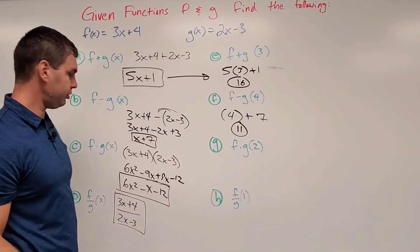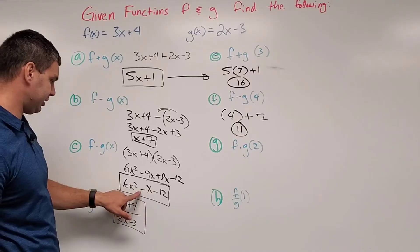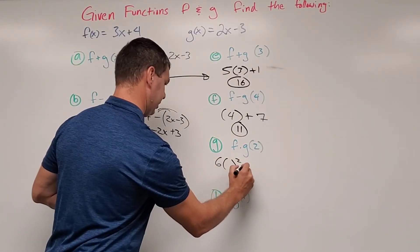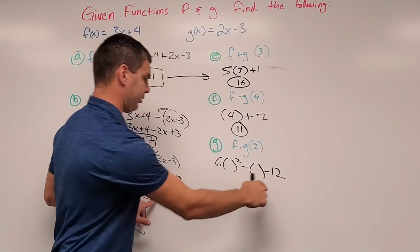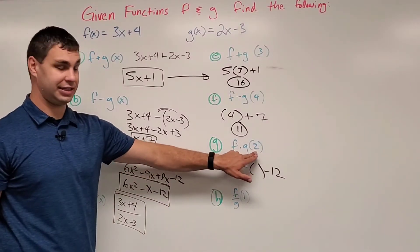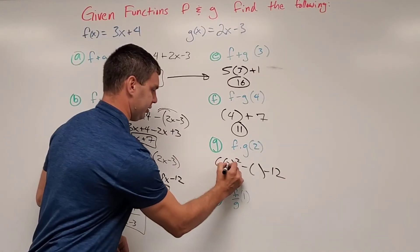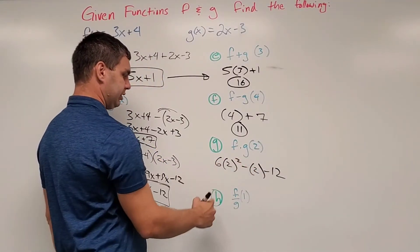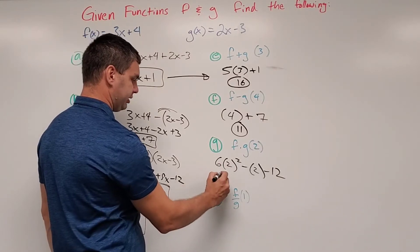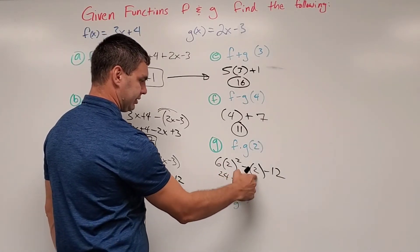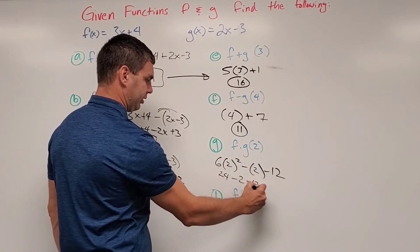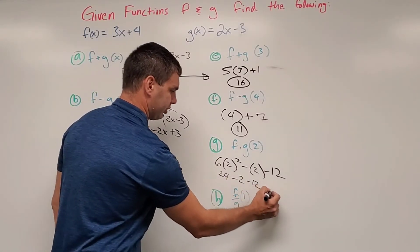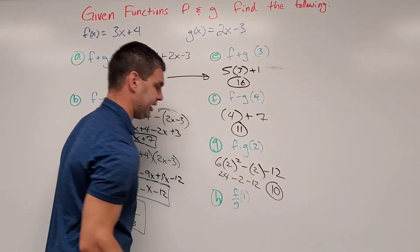f times g of 2. Well, we know f times g of x was 6x squared. Let's see. 6x squared minus x. Notice I'm using open parentheses for where I want to put the x because that way, instead of x, if I want to put the 2 in, I can just replace my open parentheses with a 2. So 2 squared is 4. 4 times 6 is 24 minus 2 minus 12. 24 minus 2 is 22. And 22 minus 12, of course, is 10. Write it off to the side there.